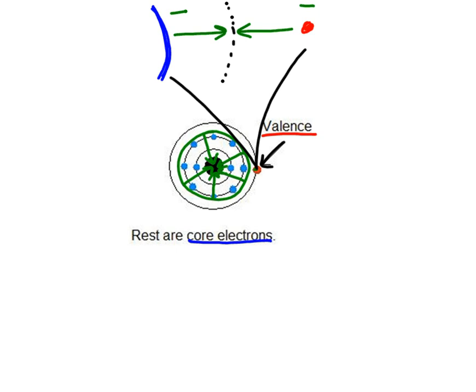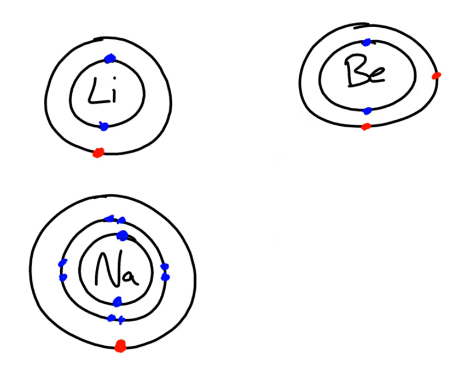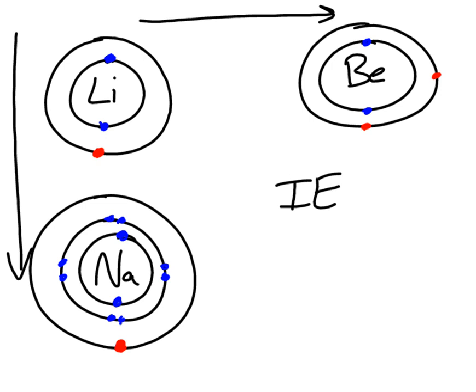Shielding is, in many cases, the reason why atomic radius and ionization energy have their trends. So let's take a look at why shielding affects your ionization energy. Here I have a diagram showing a group going downward and a period going across. I'm only going one element over for each, but you'll still see the trend.